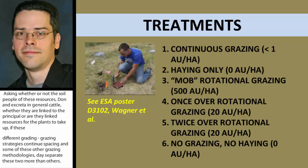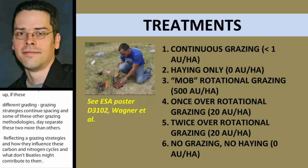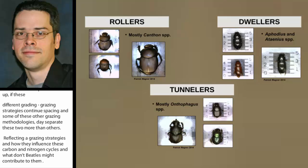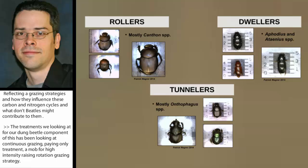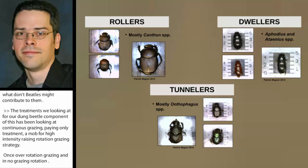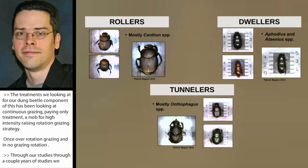The treatments we've been examining for our dung beetle component include continuous grazing, haying only, mob or high-intensity grazing, a rotational grazing strategy, once-over rotational grazing, twice-over rotational grazing, and a no-grazing strategy. Through a couple years of studies, we've found all three niches — rollers, tunnelers, and dwellers — in all of these treatments, in various abundances and diversities.